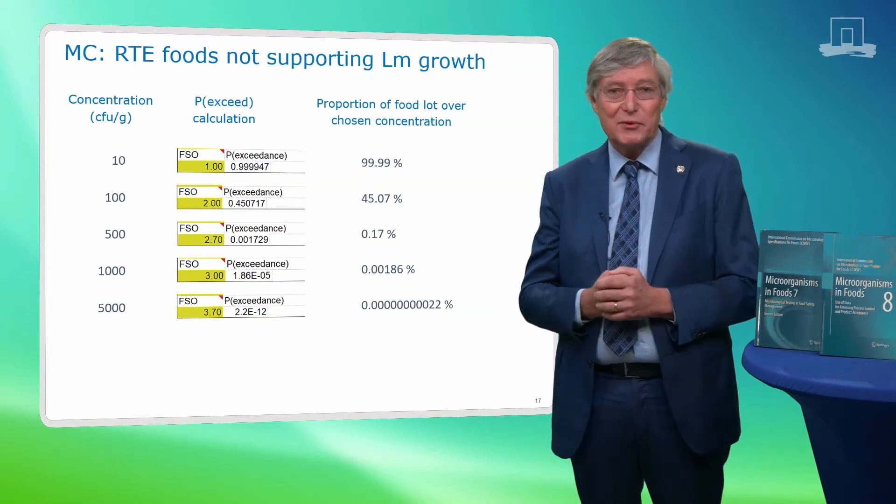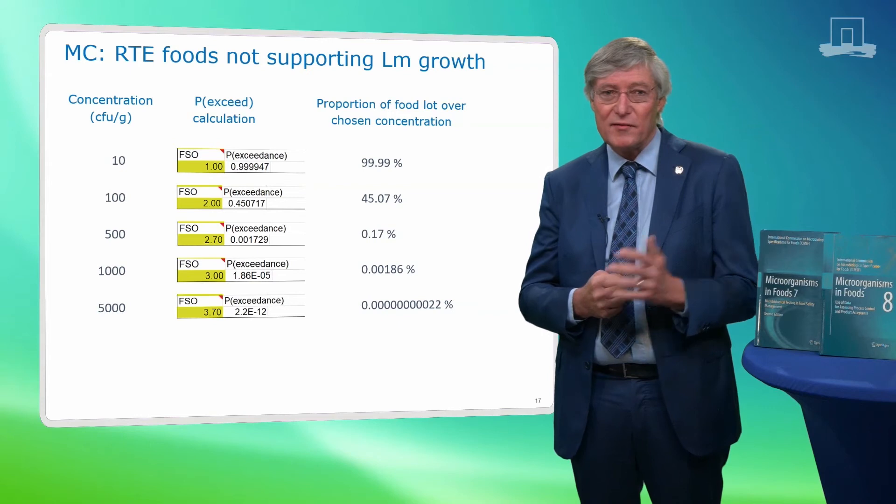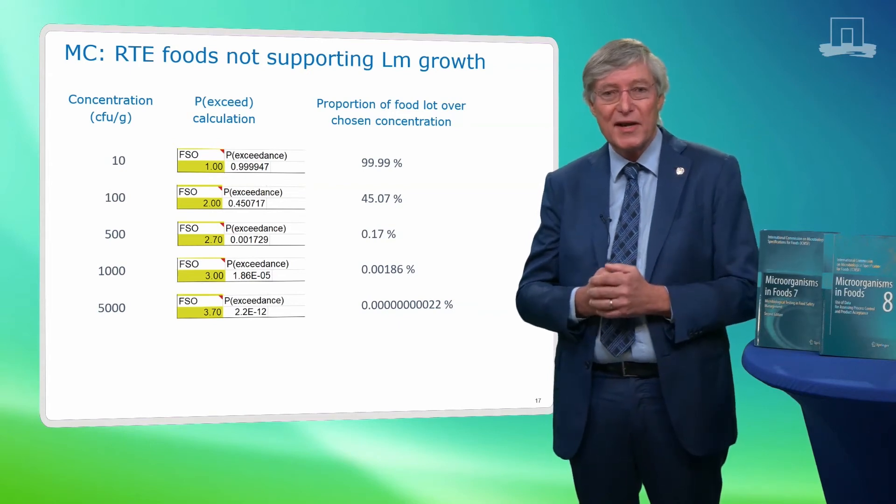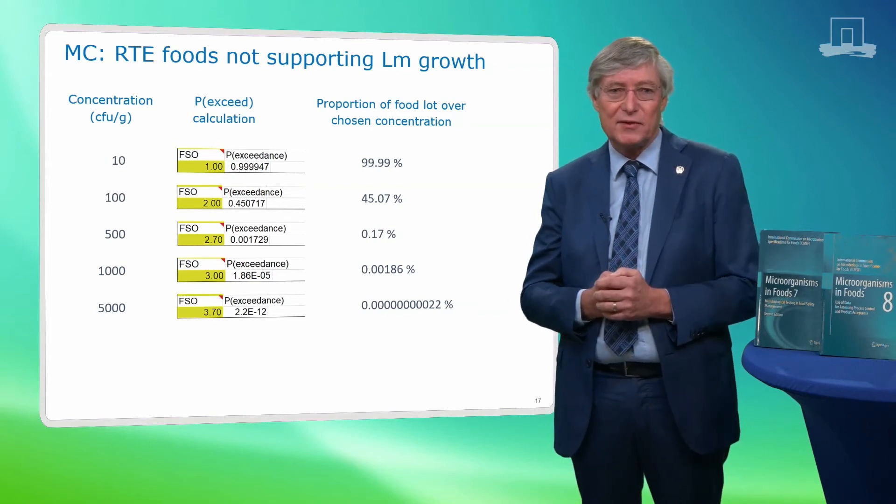In this slide you can see the results of using the p-exceedance calculation for concentrations from 10 to 5000 CFU per gram — the corresponding proportions of a just-compliant food lot that are over the chosen level. Choosing 10 CFU per gram, most samples from the food lot would show LM levels over 10 CFU per gram. With 100 CFU per gram, 45% is expected to be over, and for 1000 CFU per gram, 0.002% would be over. An even much smaller fraction would be over 5000 CFU per gram. Note that the small m limit of the sampling plan is conceptually different from the level entered for the p-exceedance calculation: m is not a maximum level for all samples, it is the maximum value in the 5 samples taken from a lot. The concentration entered for p-exceedance is a maximum level for all lot samples, and therefore can be used to calculate FSO, PO, and similar maximum levels.